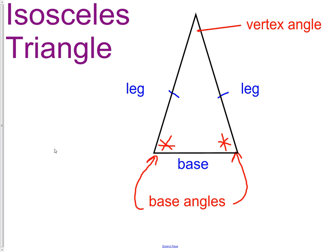If you remember, an isosceles triangle is a triangle in which two sides, which we call legs, are congruent to each other. In this picture, we have the leg on the left and the leg on the right congruent to each other.